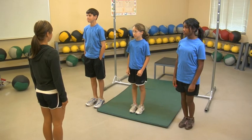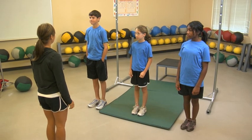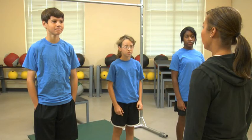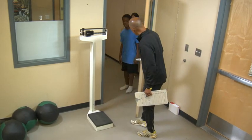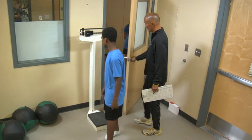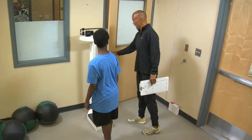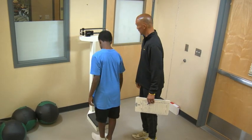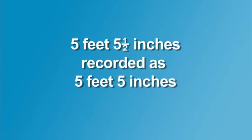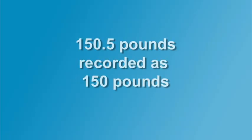Before the day of the test, students should be provided with instructions about body composition and the objective of the BMI. The examiner should establish a location for taking and recording height and weight measurements that provides privacy to the student. Students should remove their shoes when measuring height and weight. Height should be recorded to the last whole inch and weight to the nearest pound.